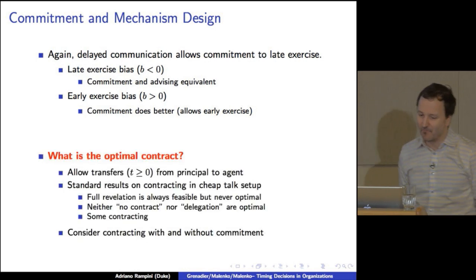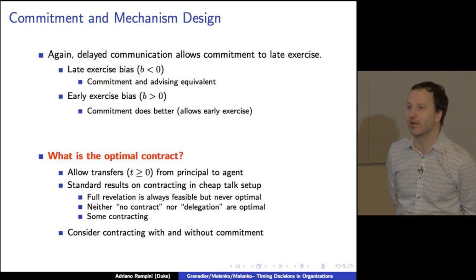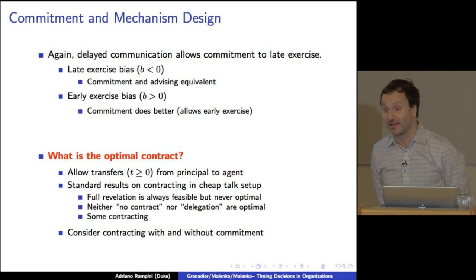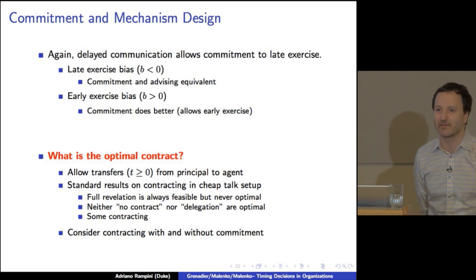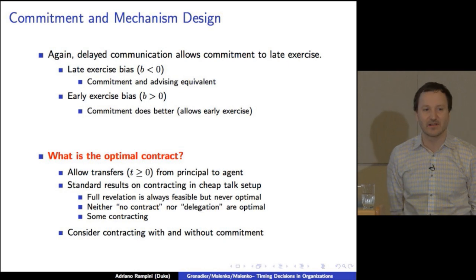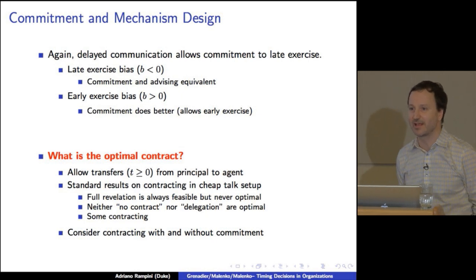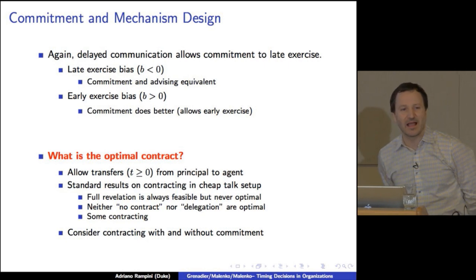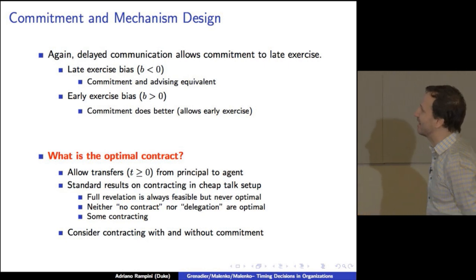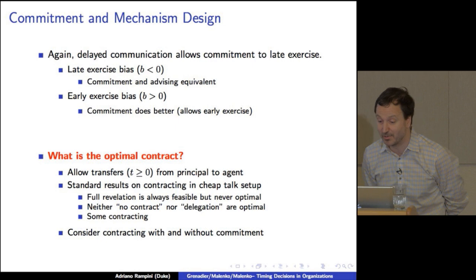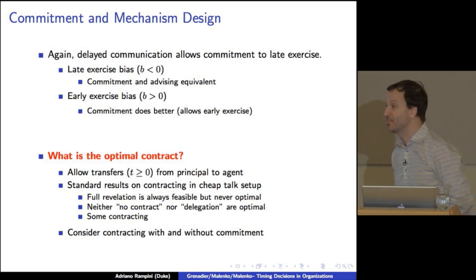Putting my mechanism design hat on, I thought it would be interesting to also think more generally about what is the optimal contract in this world if I also allow transfer from the principal to the agent at time zero, subject to some lower bound here. Why is it interesting? It's interesting because, just to remind you, the standard result on contracting in the cheap talk setup says that full revelation is always feasible, so you can always get the guy to tell you everything, but it's never optimal, too costly.